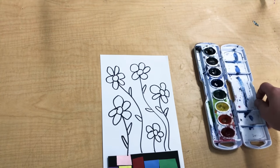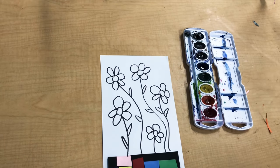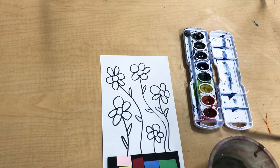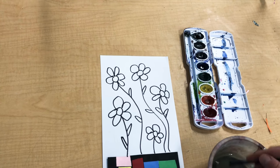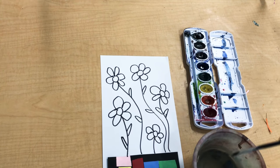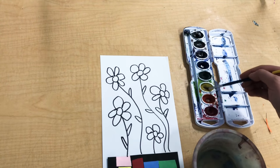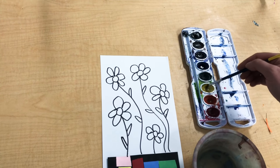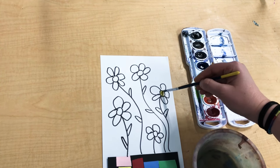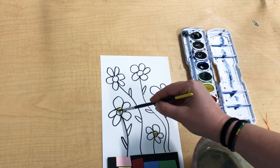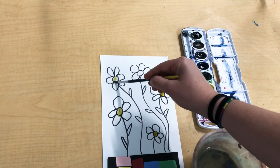We're going to use some watercolors to paint with today. When I use watercolors before I paint, my paintbrush has to go in the water. Then I'm going to pick a color like yellow. Get my yellow paint really wet. Then I'm going to put my wet paintbrush on my paper.